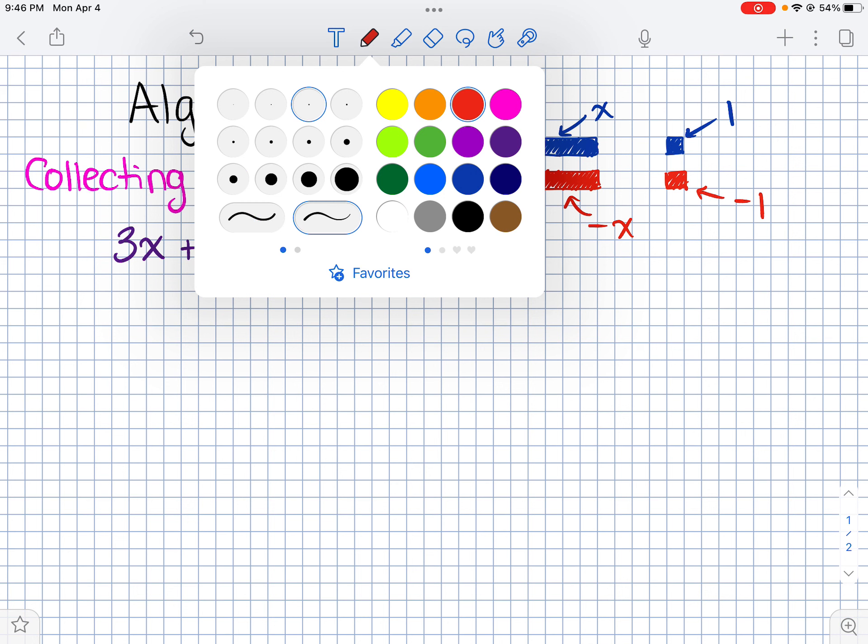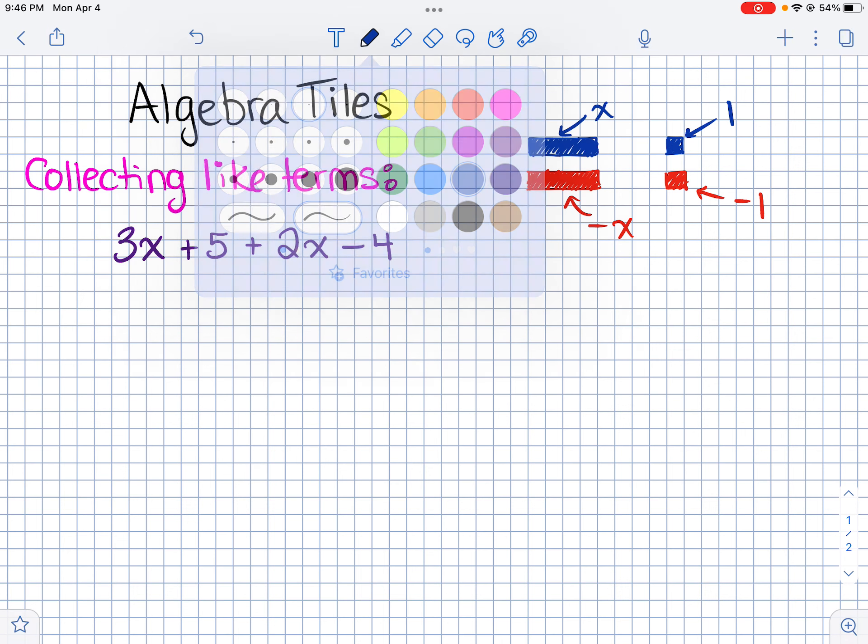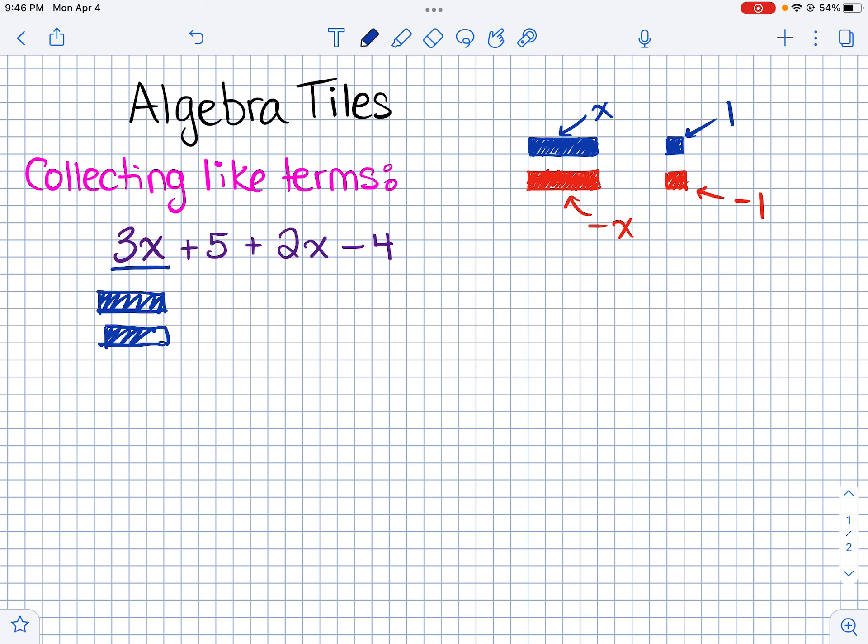So we can use tiles to help us collect like terms. So for example, if you have an expression like 3X plus 5 plus 2X minus 4, and you want to use algebra tiles to help you collect like terms, first you would want to represent the expression using algebra tiles. So here we have three X's. So we would write that as 1, 2, 3. That's our 3X tiles.